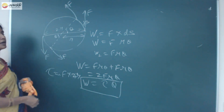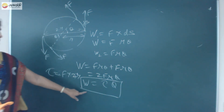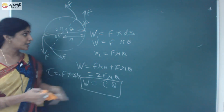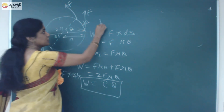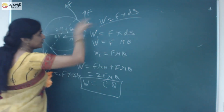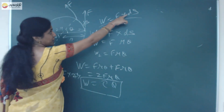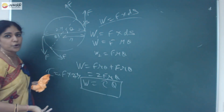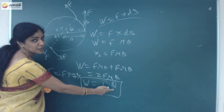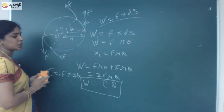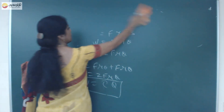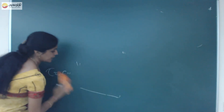To summarize: for linear motion, work done equals force into linear displacement. For rotational motion, work done by a couple is given by work done equals tau into theta, where theta is the angular displacement.